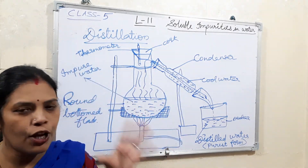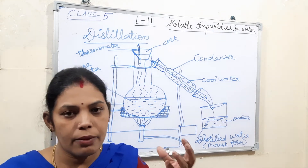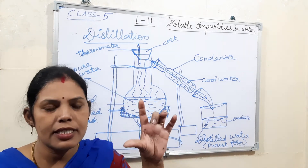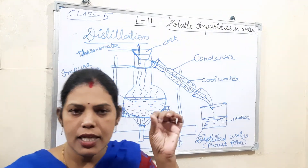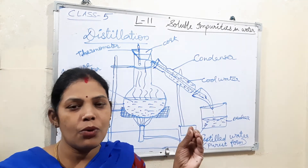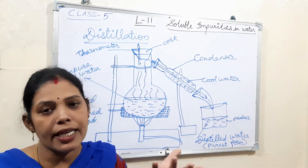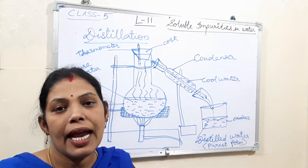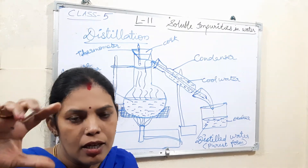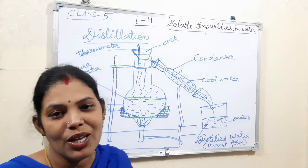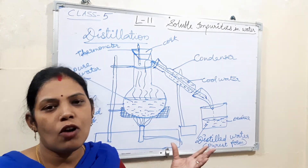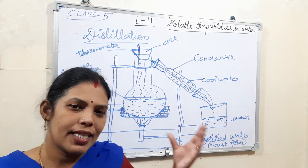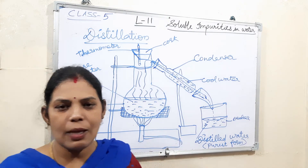Distilled water is the purest form of water and is used in many medicines. For some antibiotics, doctors provide them in powder form along with distilled water. Earlier they used to say boil water at home and then mix the medicine, but nowadays they give distilled water separately because tap water may contain germs and could cause reactions.